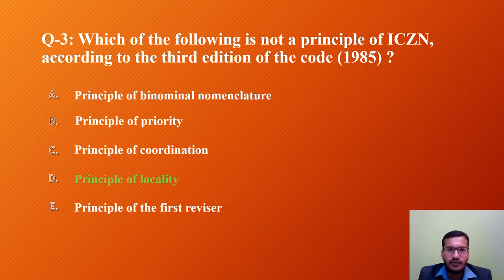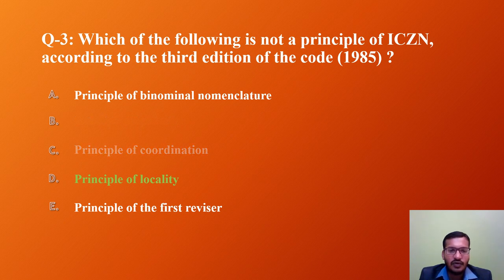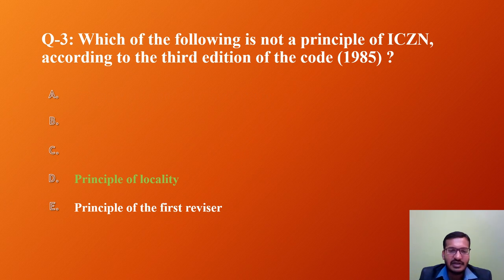Question 3: Which of the following is not a principle of ICZN according to the third edition of the code published in 1985? The options are: A) Principle of Binominal Nomenclature, B) Principle of Priority, C) Principle of Coordination, D) Principle of Locality, E) Principle of the First Reviser. Among the six principles we studied, there is no Principle of Locality. So the answer is D — Principle of Locality.